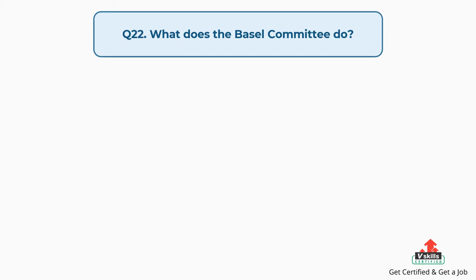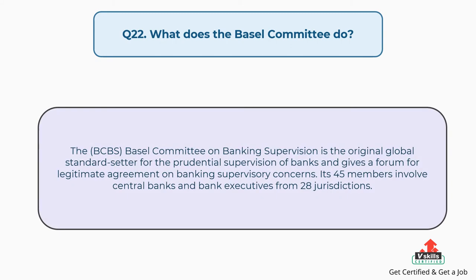Question number twenty-two: what does the Basel Committee do? The Basel Committee on Banking Supervision is the original global standard setter for the prudential supervision of banks and gives a forum for legitimate agreement on banking supervisory concerns. Its 45 members involve central banks and bank executives from 28 jurisdictions.